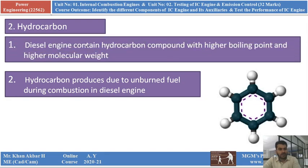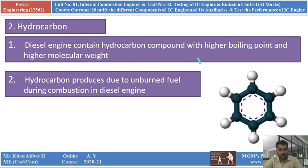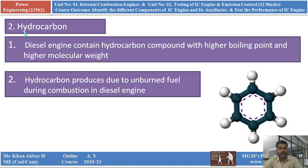The next pollutant is hydrocarbon. The diesel engine contains hydrocarbon compounds with a higher boiling point and higher molecular weight. Hydrocarbon is produced due to unburnt fuel during combustion in the diesel engine. Because of the unburnt fuel, hydrocarbon is also produced as a pollutant.